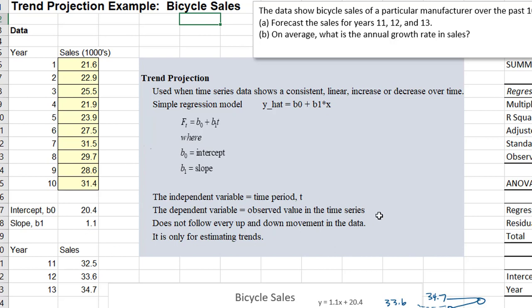Again, since the sales are in thousands of units, the 1.1 corresponds to 1.1 times 1,000 units, or 1,100 units. And so here, we would say, annual growth rate in sales is 1,100 bicycles per year.